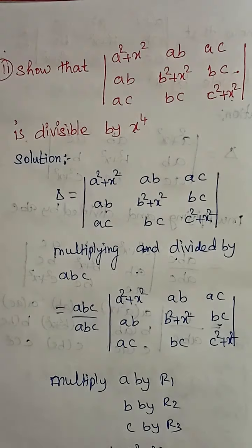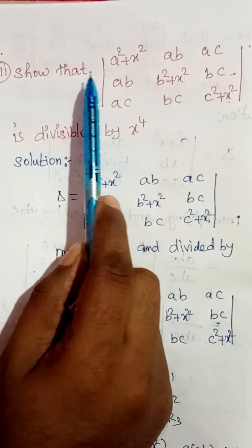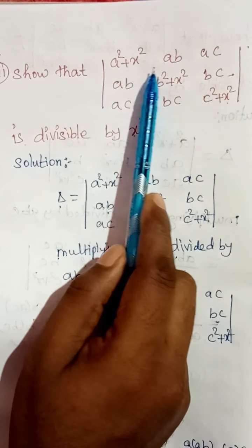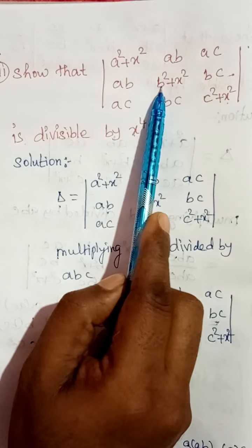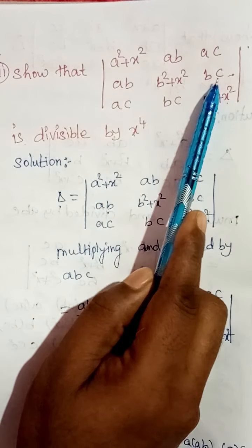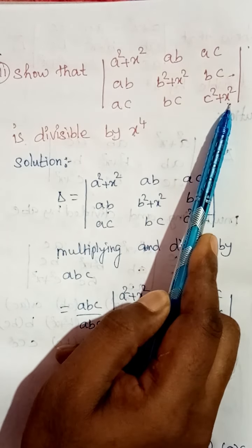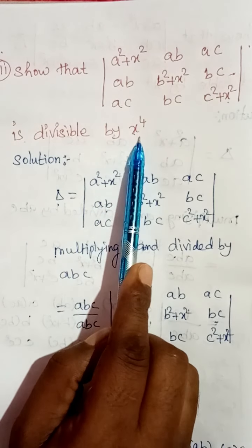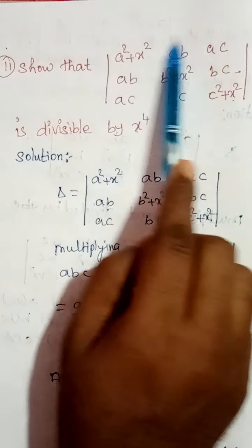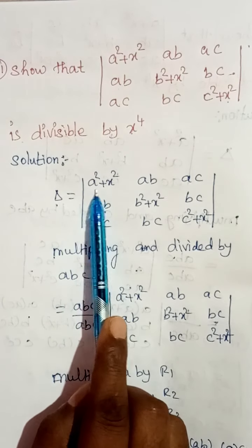Good morning students. Today we are going to discuss question number 11: show that the determinant of a square plus x square, a b, a c, a b, b square plus x square, b c, a c, b c, c square plus x square is divisible by x power 4. So I am taking this determinant as delta.